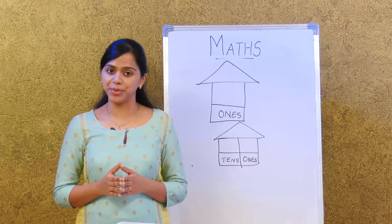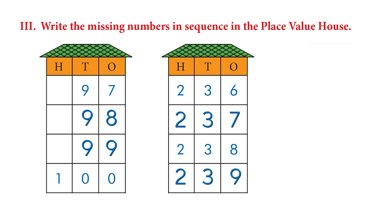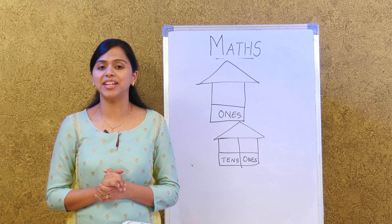Now let's go to the next page — we have a place value house with a sequence of numbers. For 97, nine is in the tens place and seven in the ones place: nine tens and seven ones. Then 98 is nine tens and eight ones. Then 99. For 236, the next in the sequence is 237, then 238, then 239.